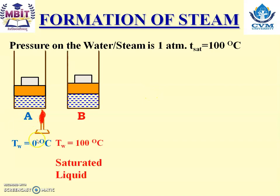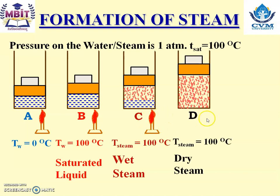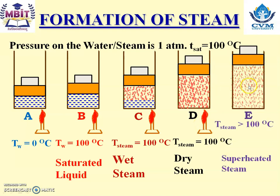Point A is water at 0 degree Celsius. If we supply heat, it will reach the saturation temperature and it is known as the saturated liquid. If we continue to supply heat, we get point C — a mixture of water and steam known as wet steam, at saturation temperature. If we supply heat again, 100% of water is converted into steam — that is dry steam at point D, again at saturation temperature. If we supply heat further, we get superheated steam at point E, where temperature is more than saturation temperature.